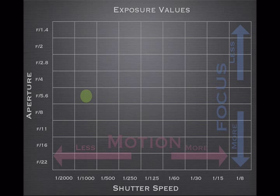Let's look at this green dot — it's at f5.6 and 1/1000 of a second. Let's say that photo it produced was way too dark, but you do like the depth of field — you are taking a portrait and you like the depth of field. One option is just to move it over in the shutter speed: you can drop it from 1/1000 to 1/250. That would increase the amount of light by four times — two times to 1/500, and two times more to 1/250.